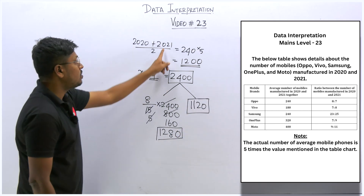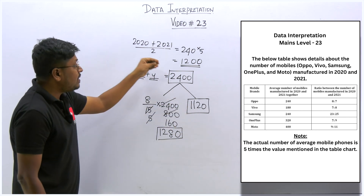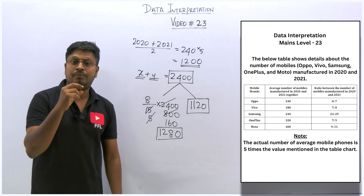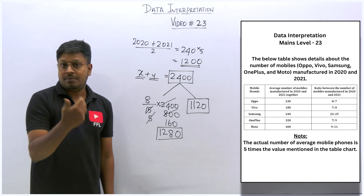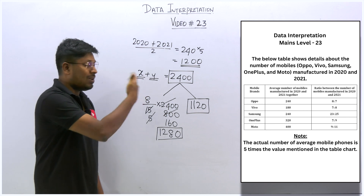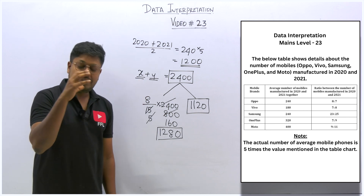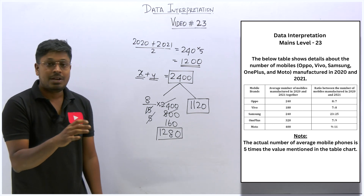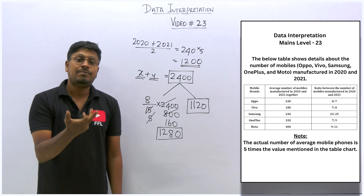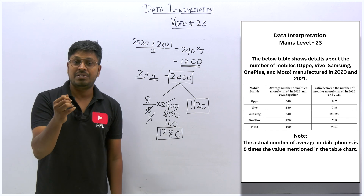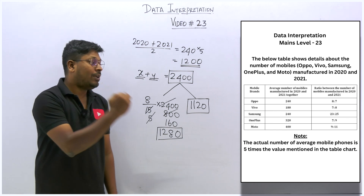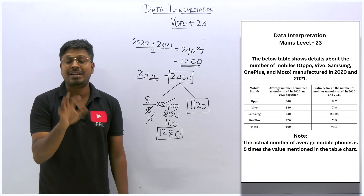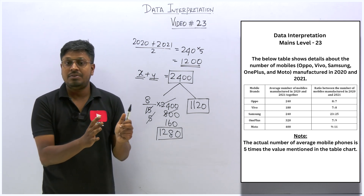We know the total is 2400, so subtracting: 2400 − 1280 = 1120. So 1120 is the total number of mobiles manufactured by Oppo in 2021. We have to similarly find values for all remaining brands in the table, then frame a new tabular column. Initially it takes more than 5 minutes to find all the values, but once you have them, solving the questions is really easy.